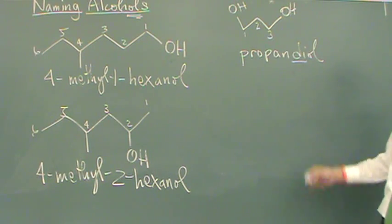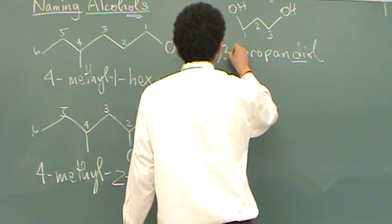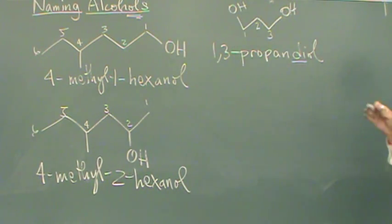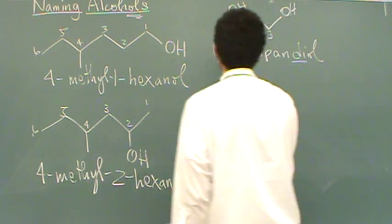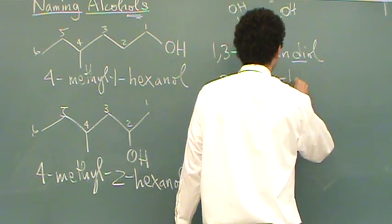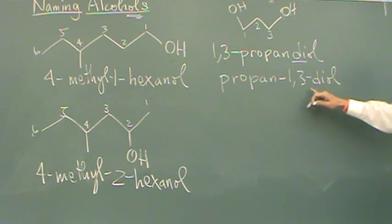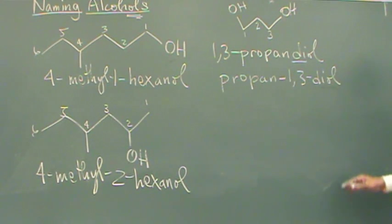You can put a tri here if there's three OH groups, and you get the picture. So you also need to show where the OH groups are, so they're on the one and three position. There's another way you can do this. You could also say this is propan-1-3-diol. So you can put the numbers in the middle of the name right before the suffix is coming. In general, it doesn't make a big difference. I would do whatever your instructor wants you to do. However, sometimes you have to do this.